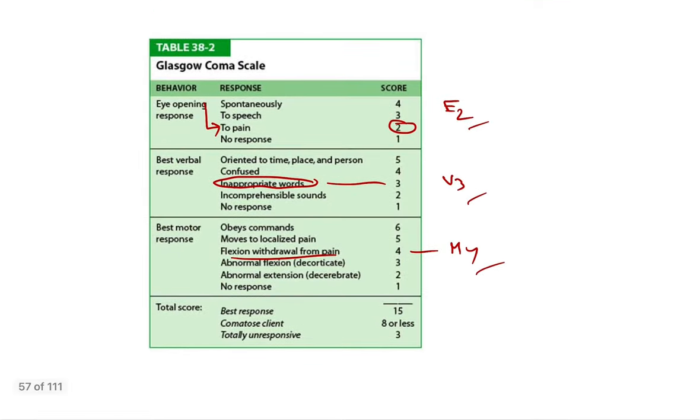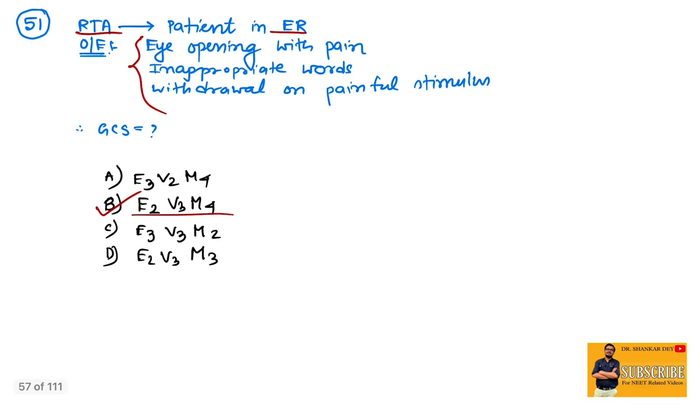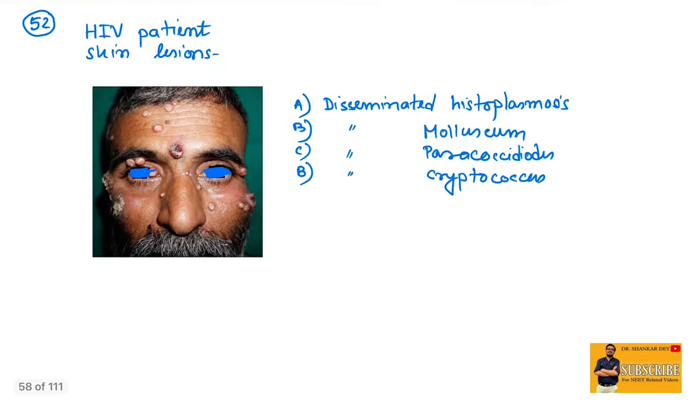Coming to question number 52: HIV positive patient with multiple skin lesions. See the typical umbilicated lesion. The image shows face and neck with multiple umbilicated lesions. This was nothing but disseminated molluscum or molluscum contagiosum with umbilicated nodules all over the body in an immunocompromised patient.